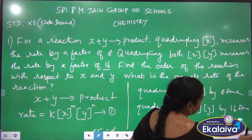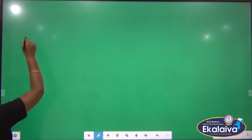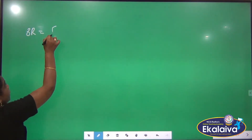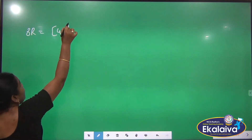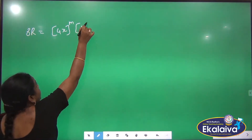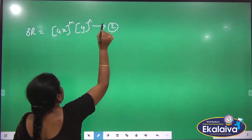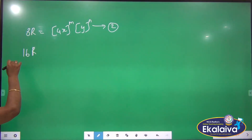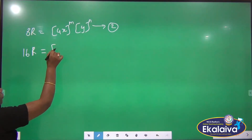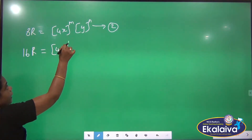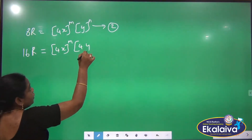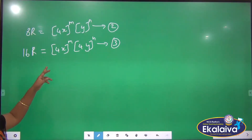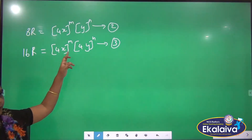We want to write the equations. This base equation is taken as equation 1. For the 8 times increase, we write equation 2: the rate increases 8 times by increasing concentration of X by 4 times, giving 4 to the power M and Y to the power N. And for 16 times, equation 3: the overall rate is increased by 16 times by increasing concentration of X by 4 and concentration of Y by 4. From this we want to find the order with respect to X as well as Y.